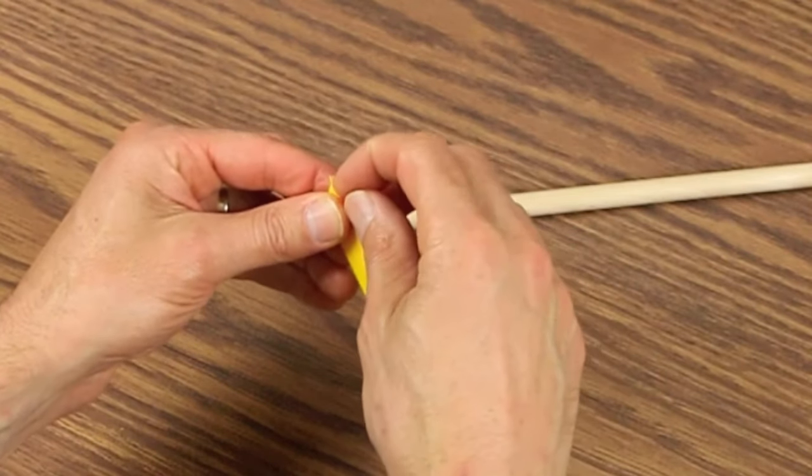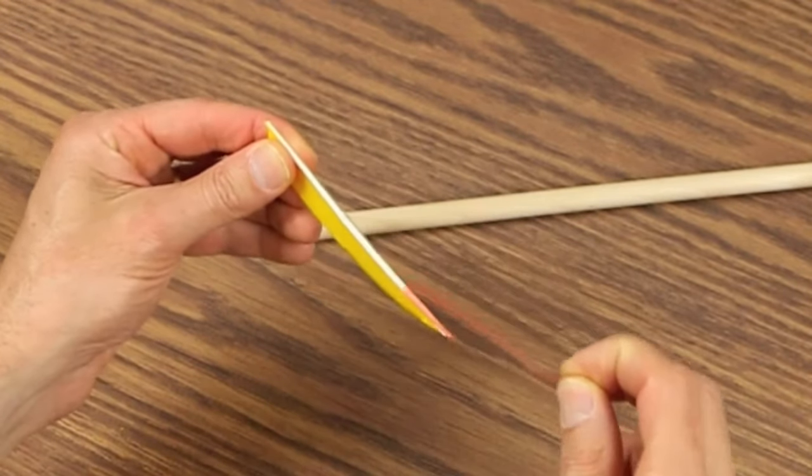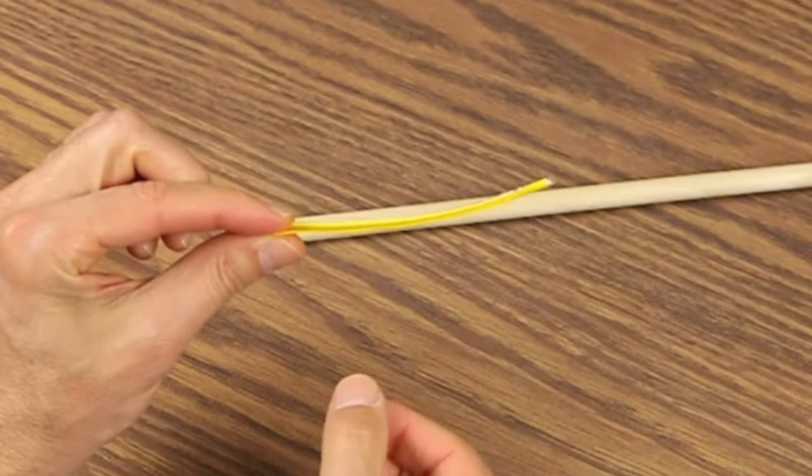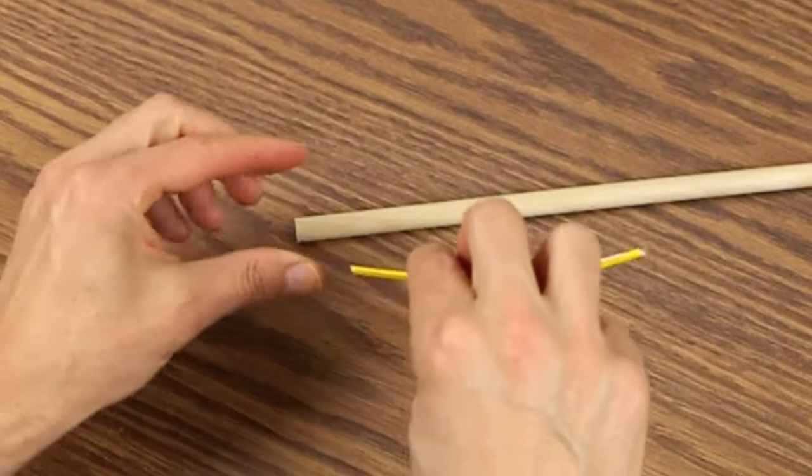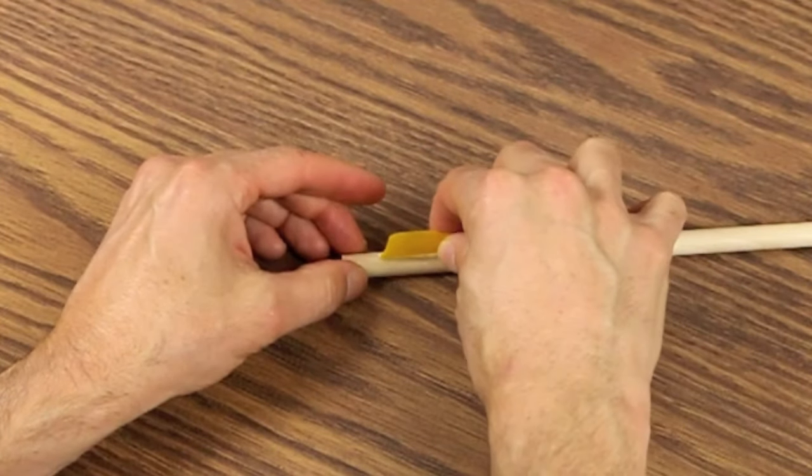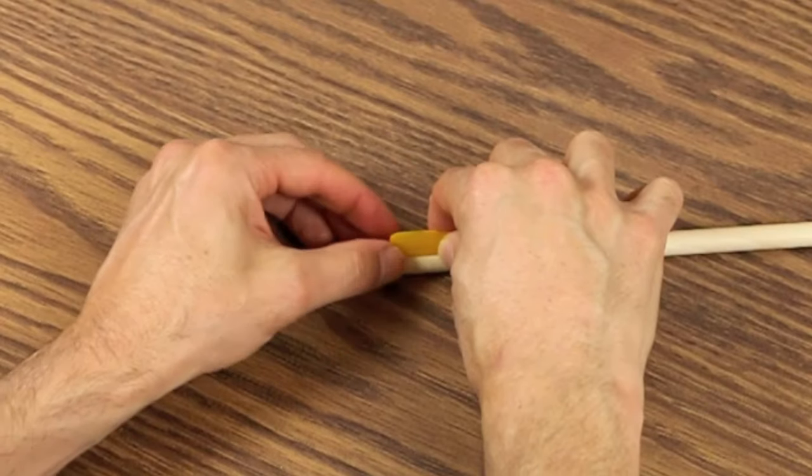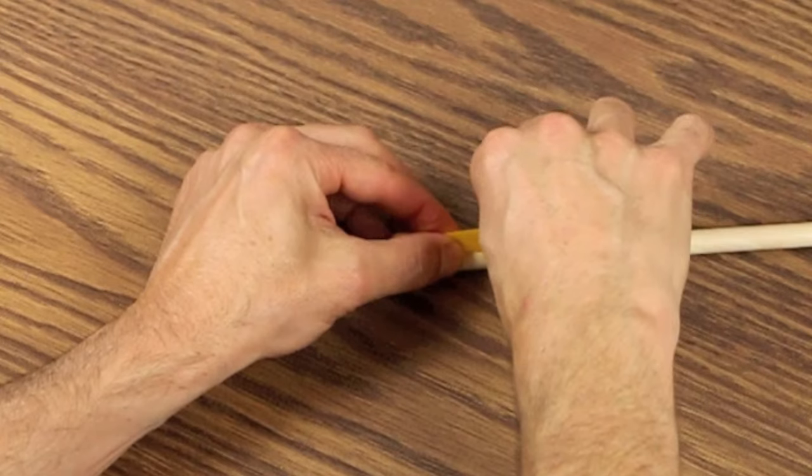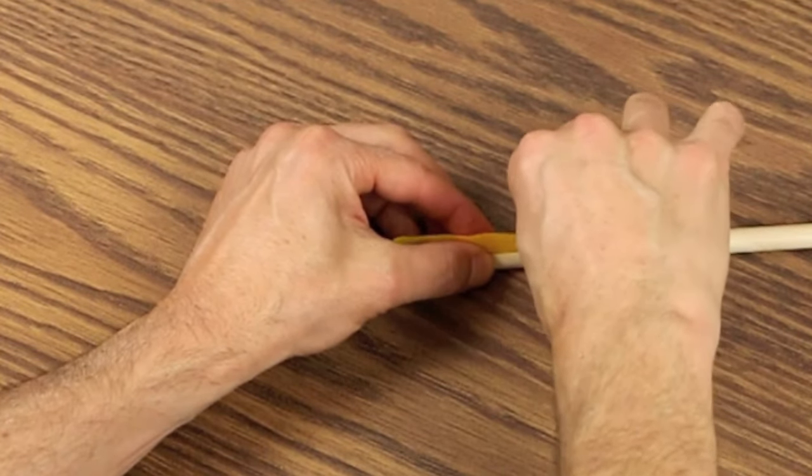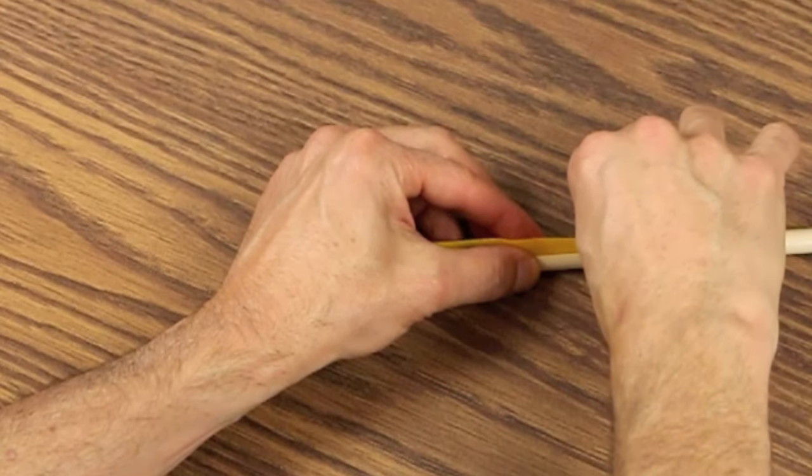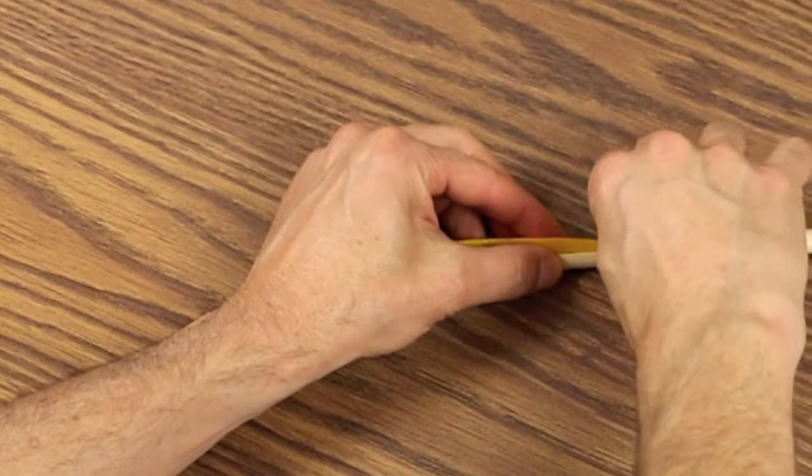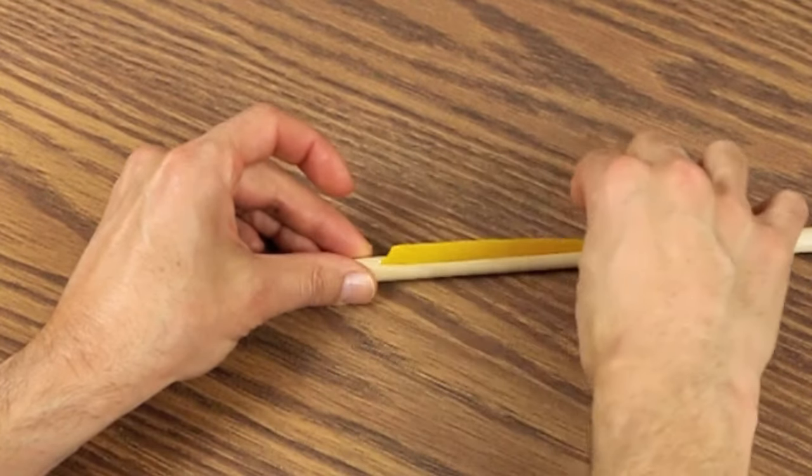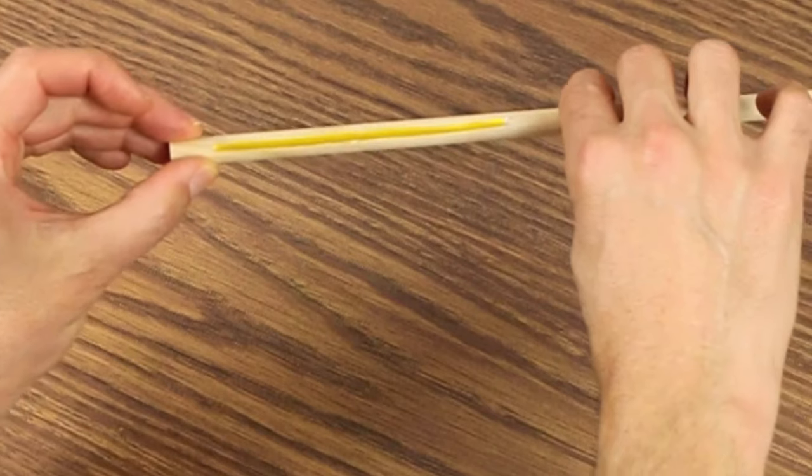Pull the red backing off of the double stick tape, and you now have a sticky side that you'll use to adhere the feather to the shaft. Again, you'll notice the curve. You'll straighten this out as you apply it to the arrow. So simply start at the back, press it down, continue moving forward, straightening as you go. And there you have it.